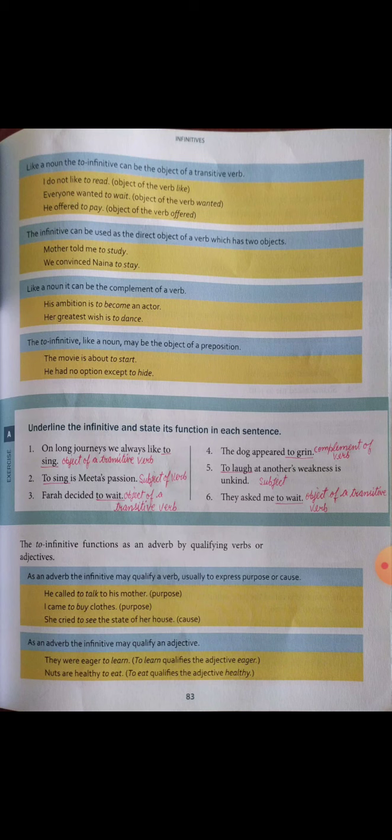The infinitive can also be used as the direct object of a verb which has two objects. For example: 'Mother told me to study' and 'We convinced Nana to stay.' In these sentences, the infinitive serves as the direct object.